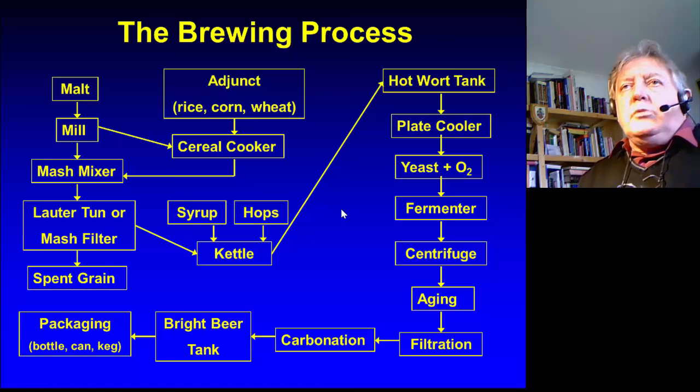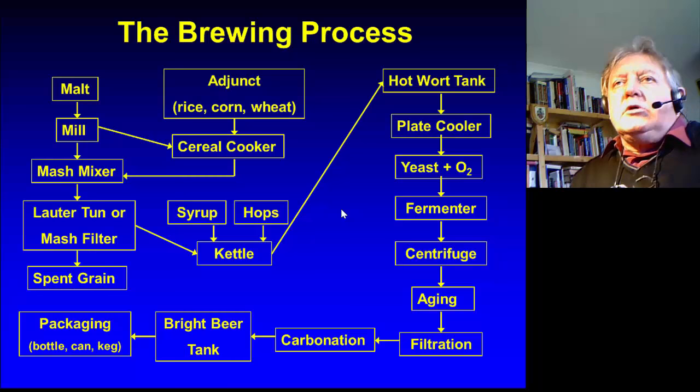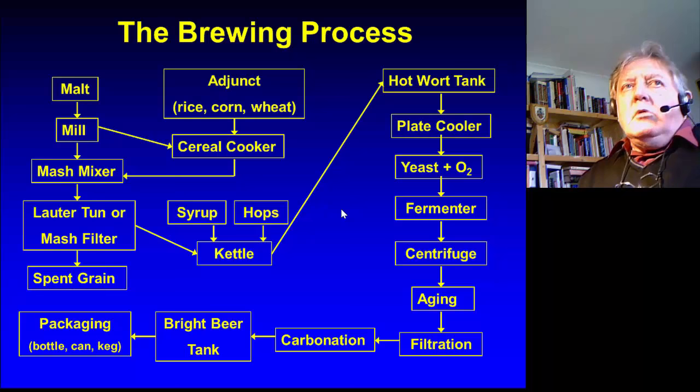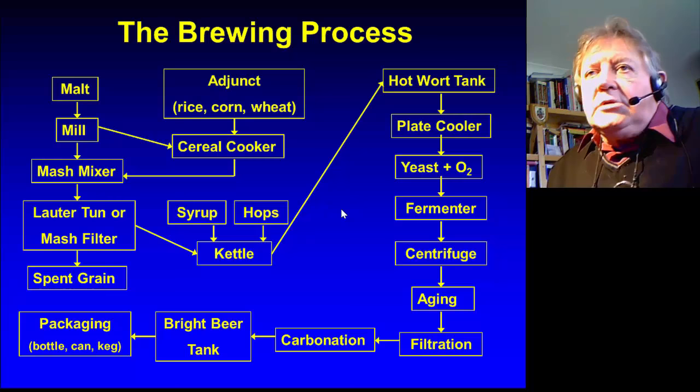The brewing process is a unit process, invariably these days batch. Continuous brewing was experimented upon for many years, but it's not used very much these days. Predominantly the brewing process is a batch process consisting of a number of units which start with malt or an adjunct, go through the kettle boiling stage, the wort is then fermented, and it is matured.